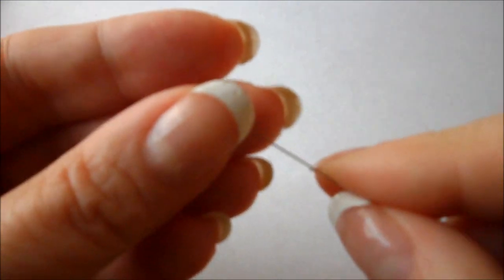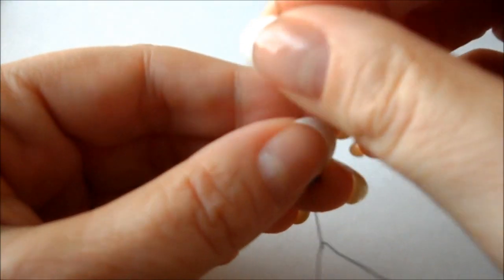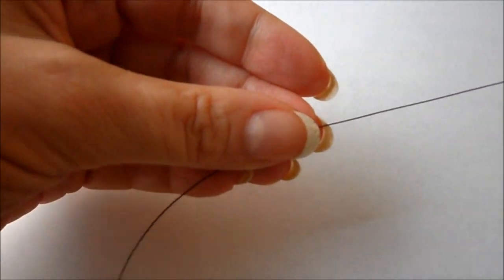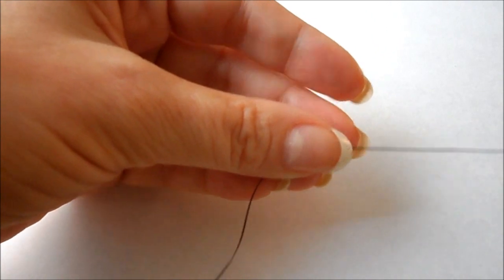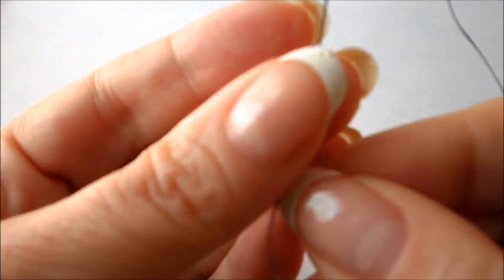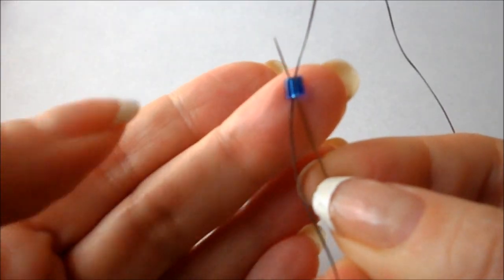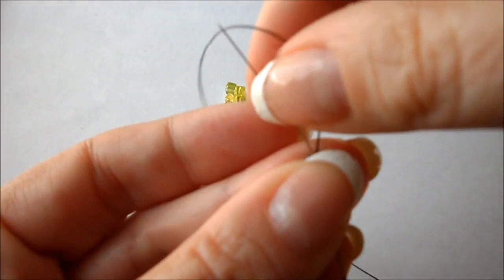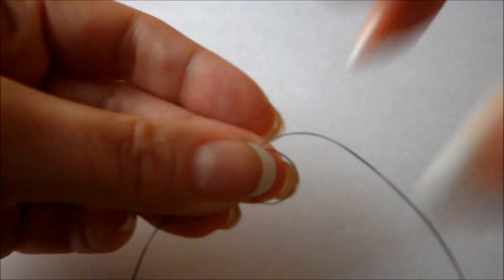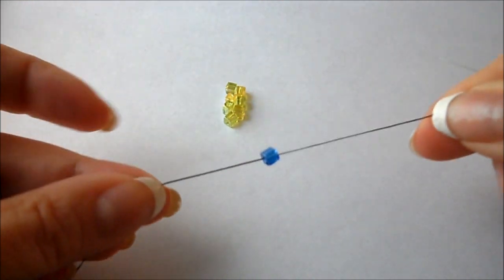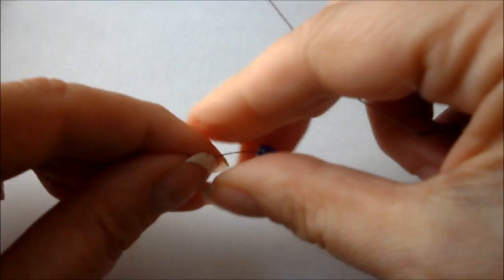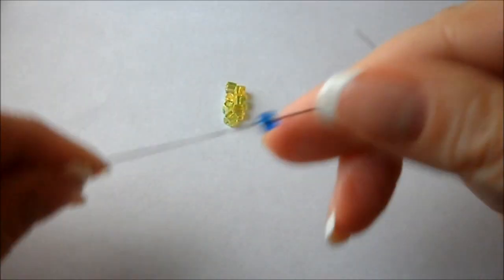To start, we're going to put a stopper bead on. Thread the bead on, bring it down towards the bottom of your string, and then thread right back up through that bead, which loops it and holds it on. This is a temporary bead. It can be slid up and down; it's just to hold your work.